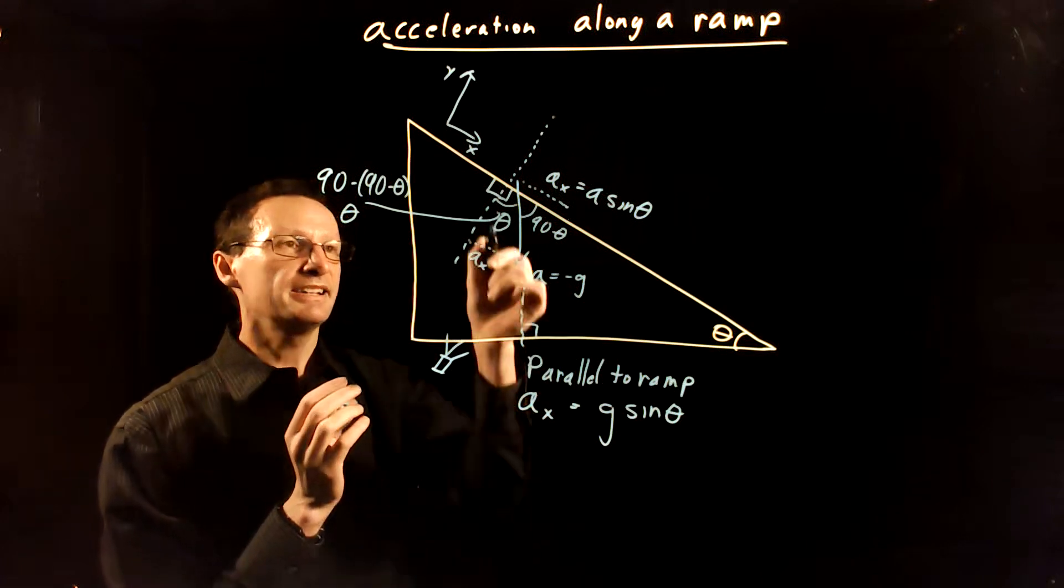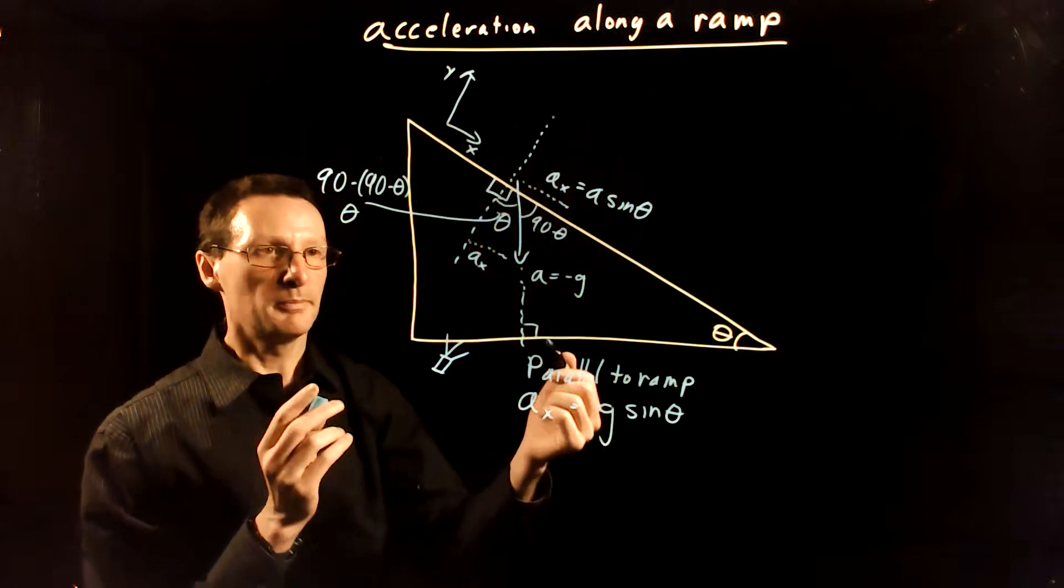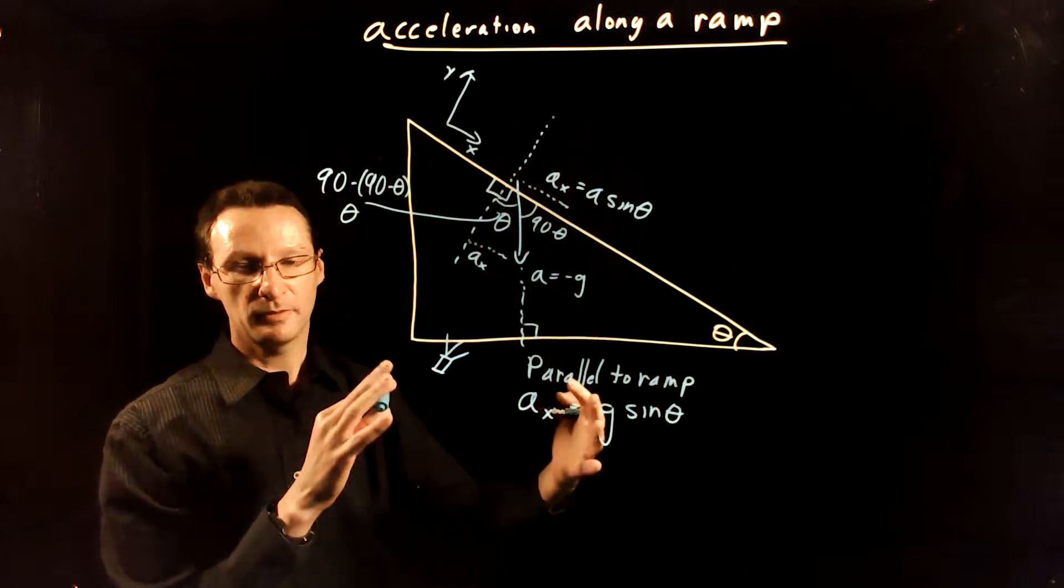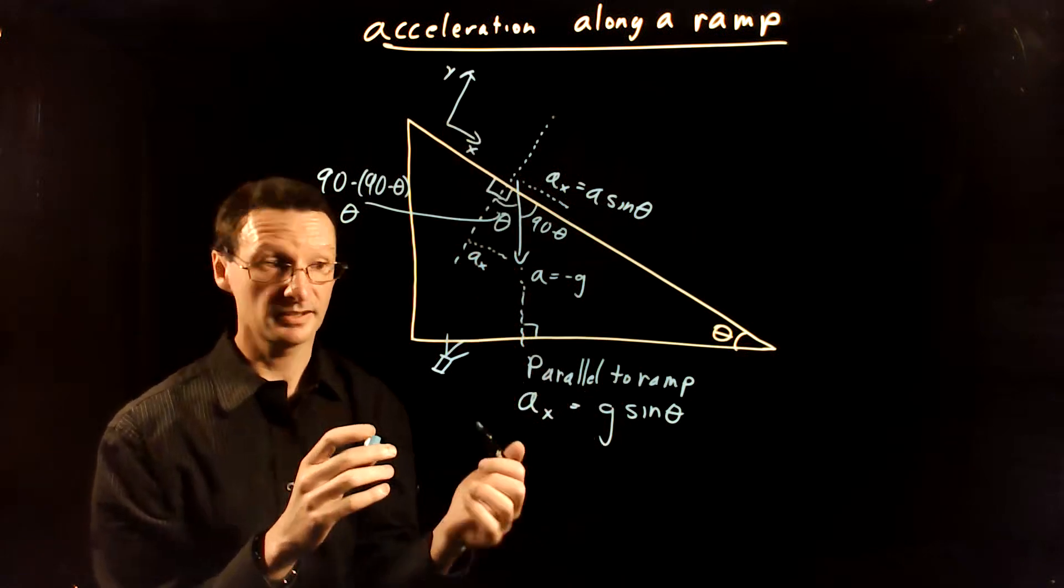Okay. And in this particular case, the way I've drawn it, that's positive. But depending on which way you have the ramp, it'll be positive or negative. You have to think about the situation and make sure it's consistent with your coordinate system.